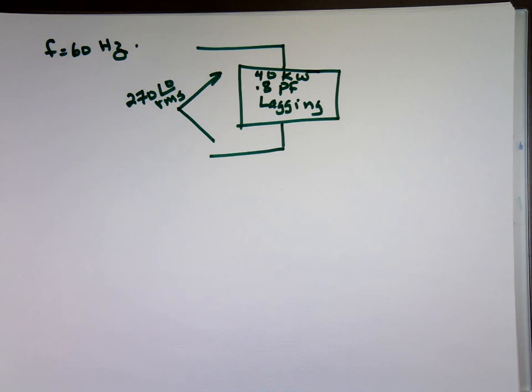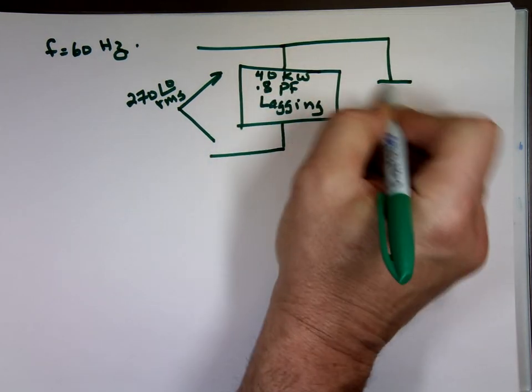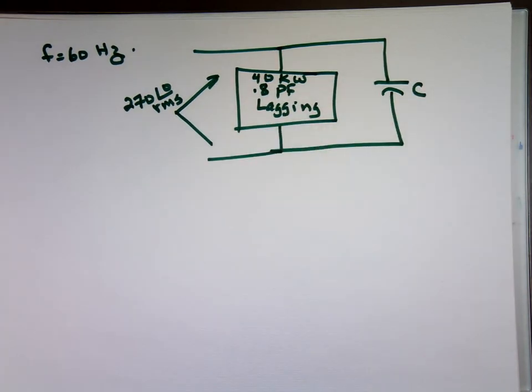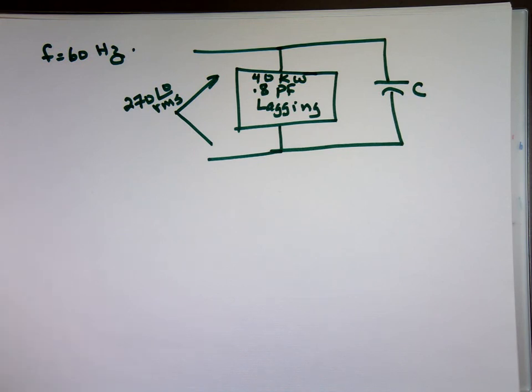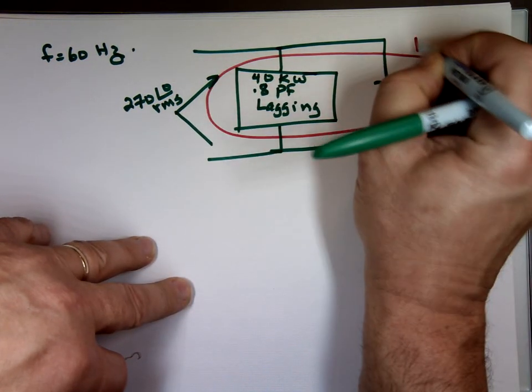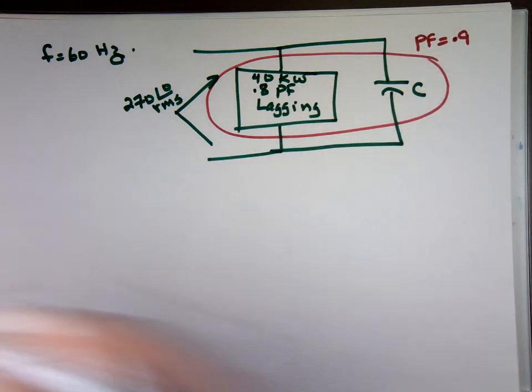And the question, what value of a capacitor placed in parallel with the load? I'm going to put a capacitor here, placed in parallel with the load. We'll raise the power factor now. Instead of 0.8, the new power factor here becomes 0.9 lagging.